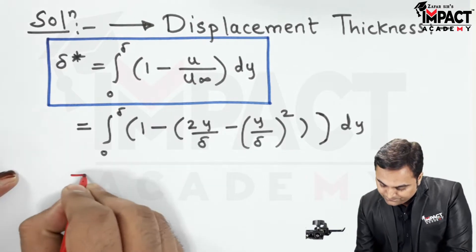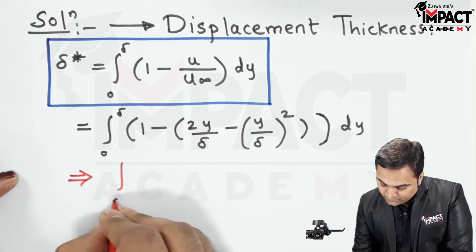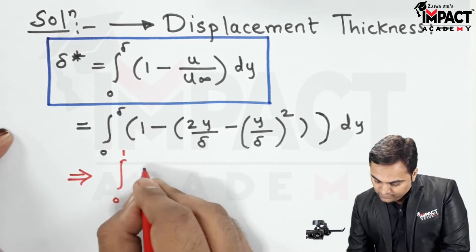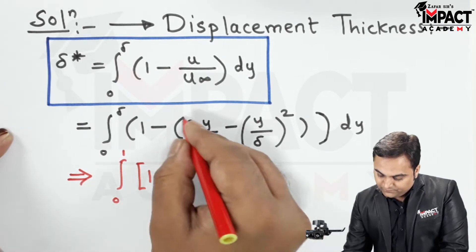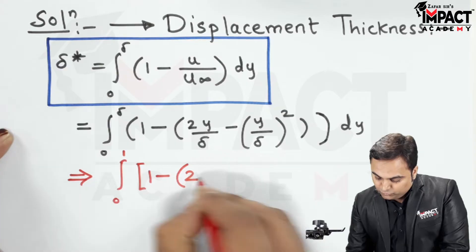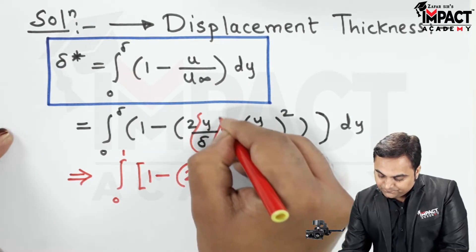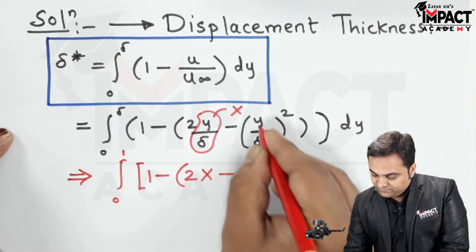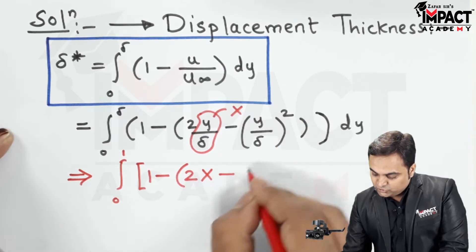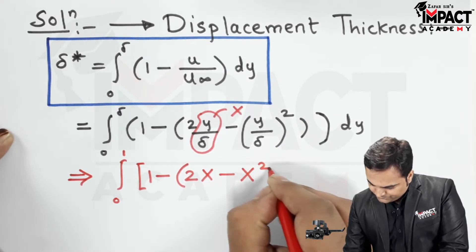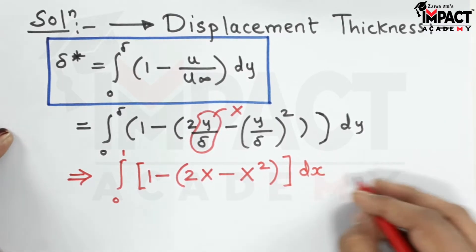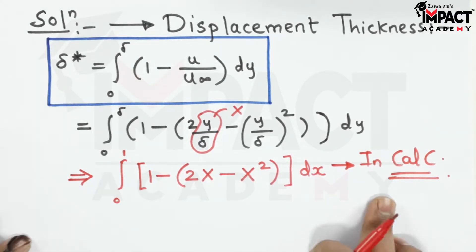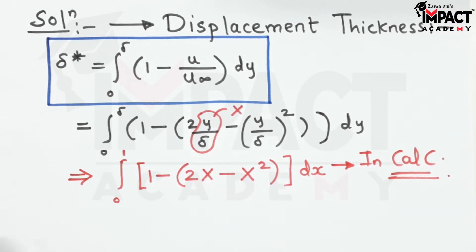Writing the integration function with a red pen: the limits change from 0 to 1, and we replace y/δ with x. So the integrand becomes 1 minus (2x − x²) dx, with limits 0 to 1, to be evaluated on the calculator.